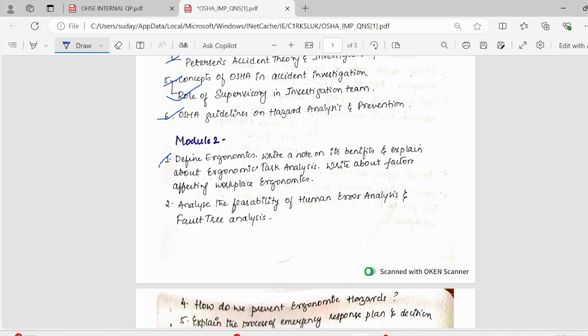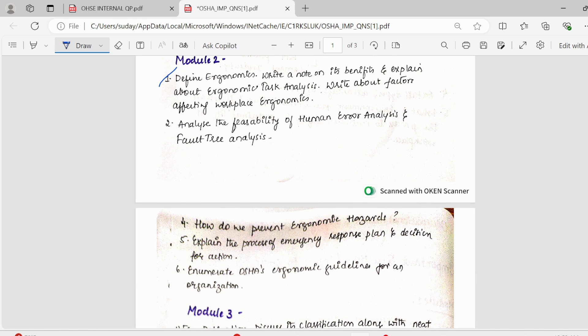Moving on to the second module, we have ergonomics. Write a note on its benefits. Explain about ergonomic task analysis. This could be a separate question also, 10 mark question. What are the factors affecting workplace ergonomics? All these questions are important. I have noted down in one set of questions, first question. Next, analyze the feasibility of human error analysis and fault tree analysis. These two topics are huge topics. Make sure you study them properly. And the flow chart and the diagrams which are there, you know it properly.